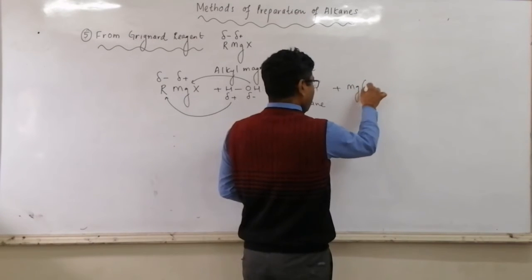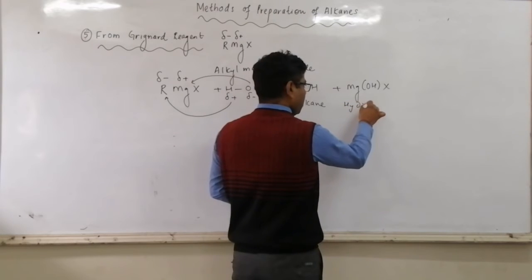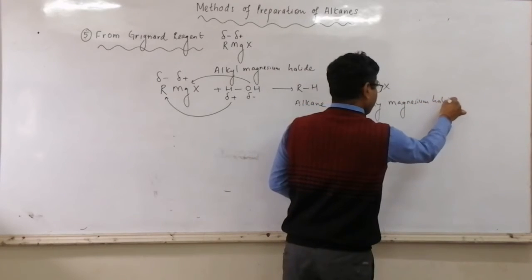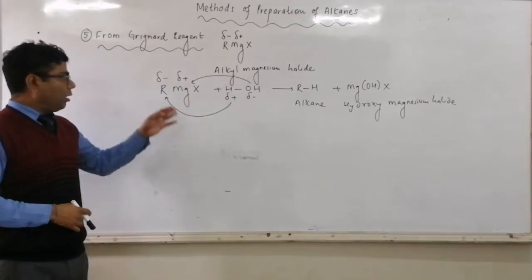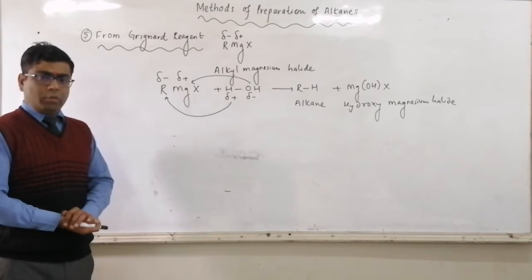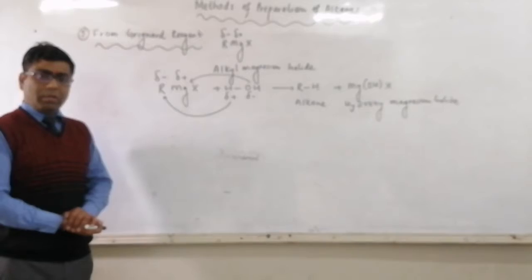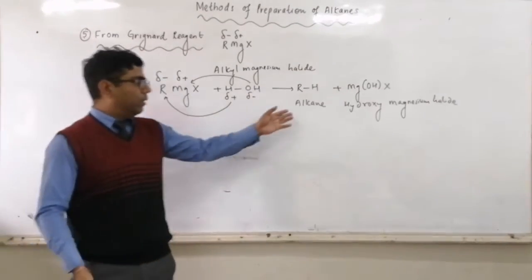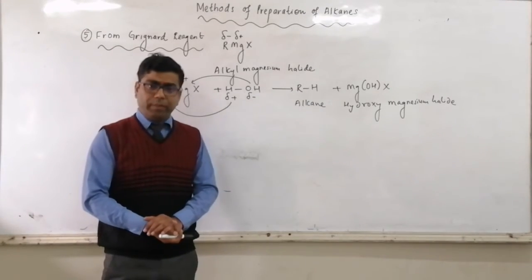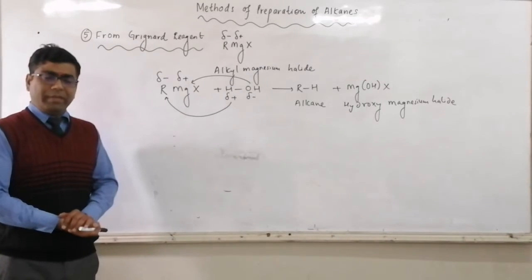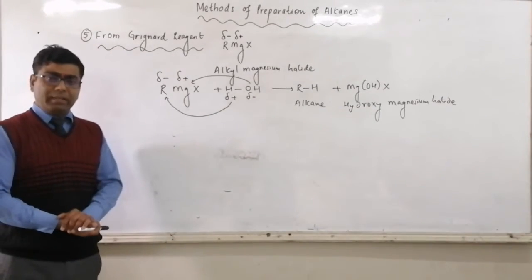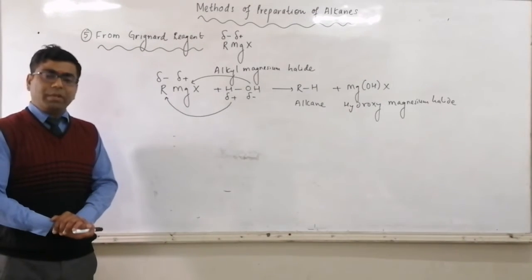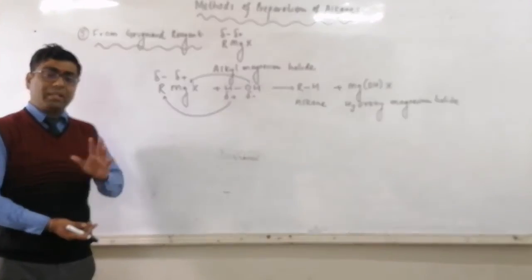And MgX with OH forms Mg(OH)X, which is called hydroxy magnesium halide. If your R part is CH₃ (methyl), you can use CH₃MgBr (methyl magnesium bromide) or CH₃MgI (methyl magnesium iodide) — then the product is methane, CH₄. If your R part is ethyl, we use C₂H₅MgBr (ethyl magnesium bromide) — then the alkane will be ethane. In this manner, Grignard reagent can be converted to alkane. The alkyl part of Grignard reagent is converted to alkane.